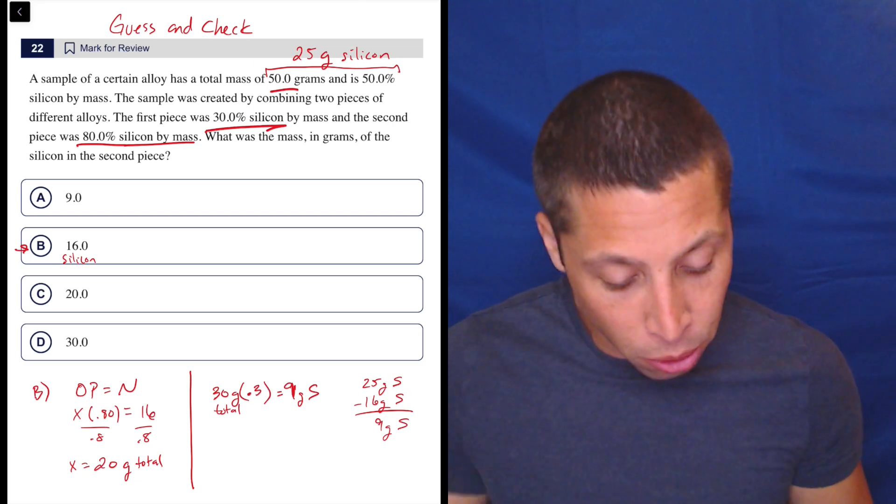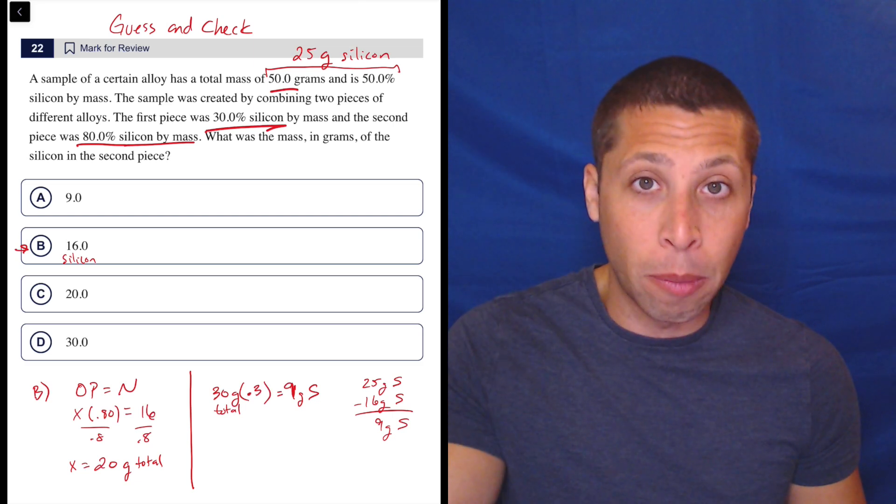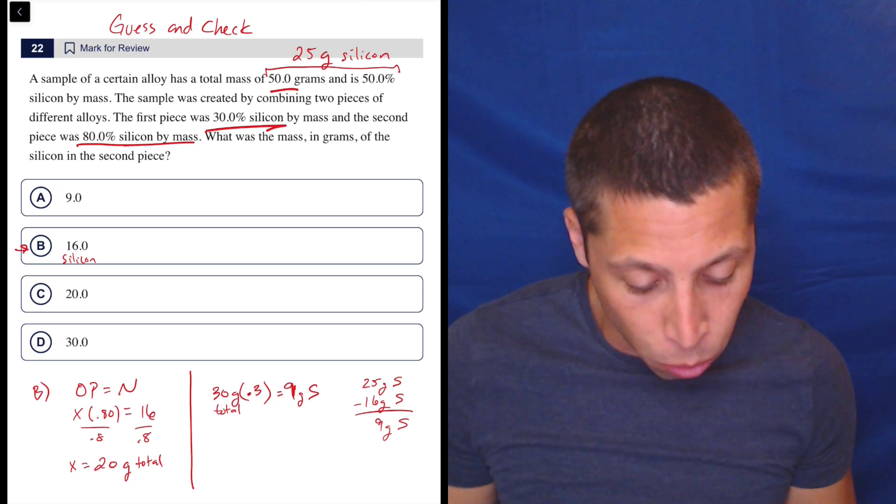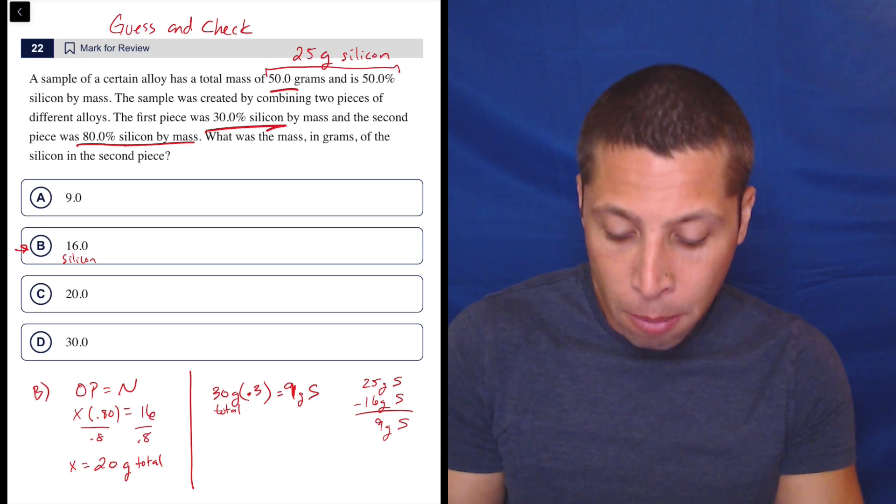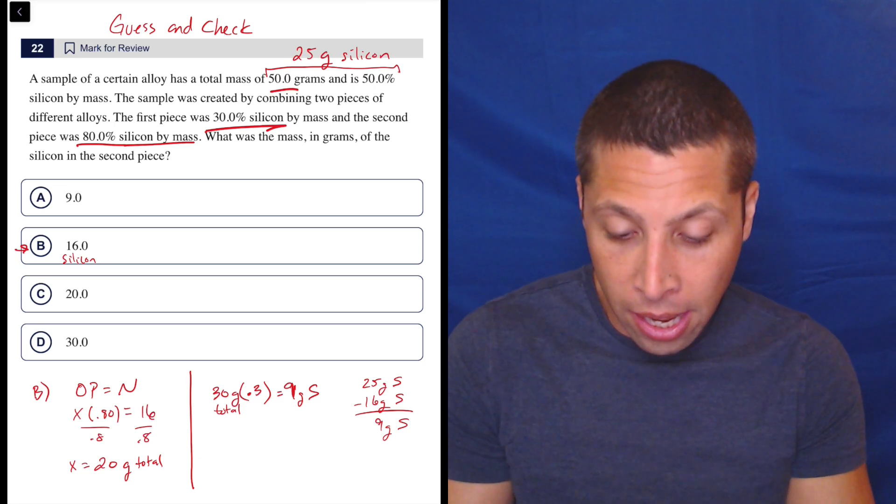So notice this is an equation with no variable, because all I'm doing is seeing, do the numbers add up? So what is 30% of 30? 0.3 times 30 is nine.